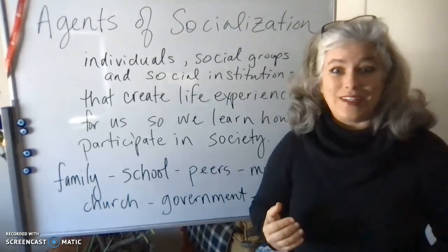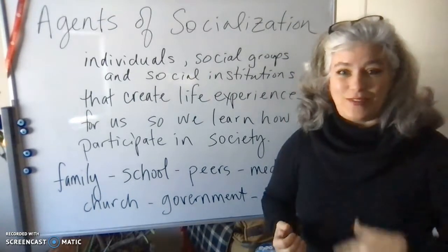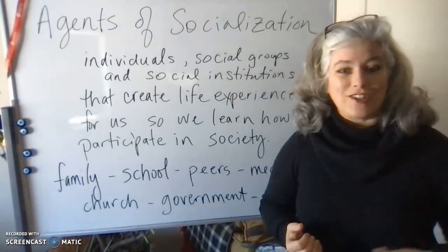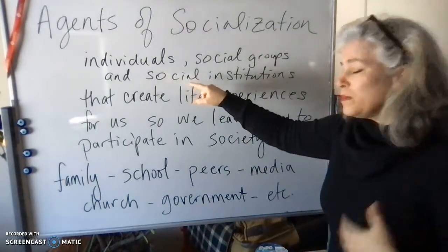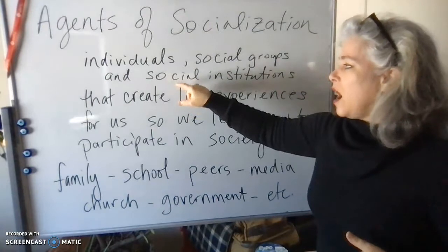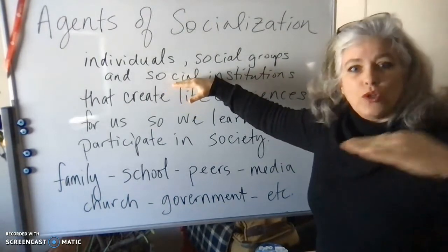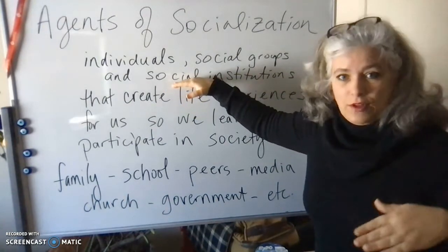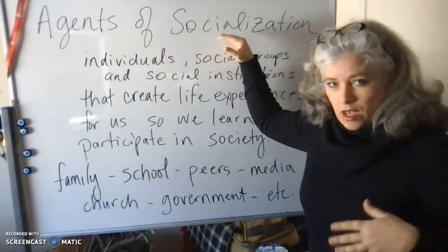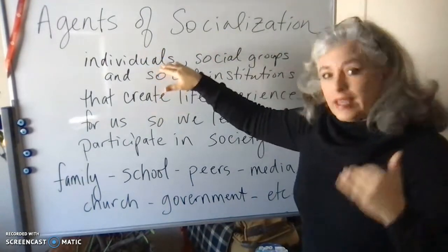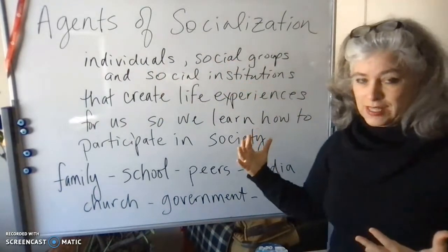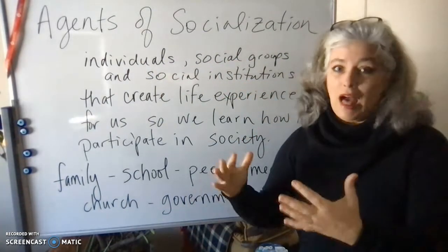There's a word you need to review right now: norms. If you don't remember that from chapter 2's discussions on culture — norms, social facts, values — these things come from the societal or structural level, and that's where social institutions come from. So agents of socialization are the individuals, the social groups, and the social institutions that guide us through life.